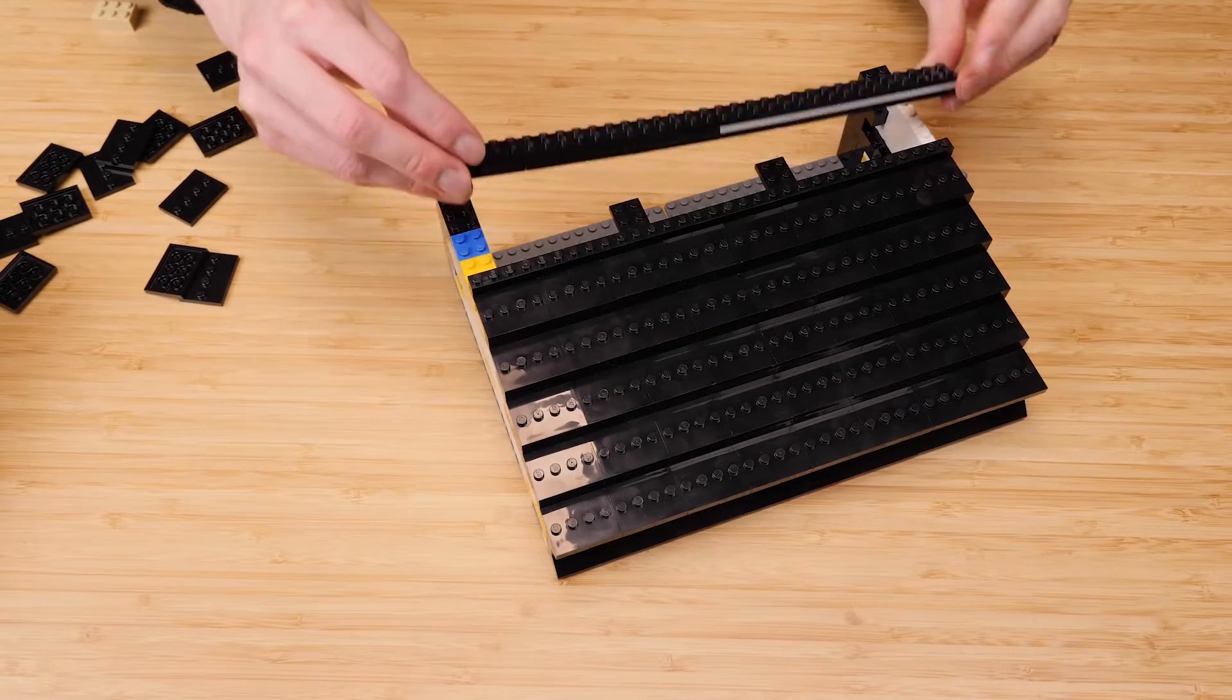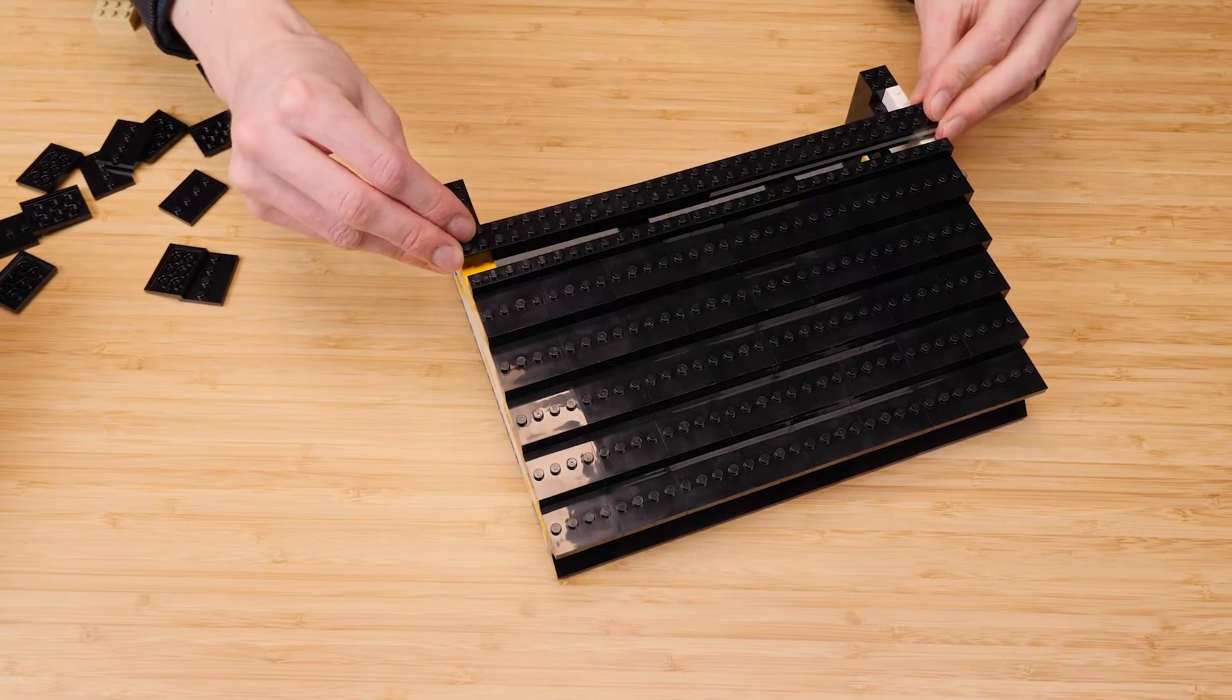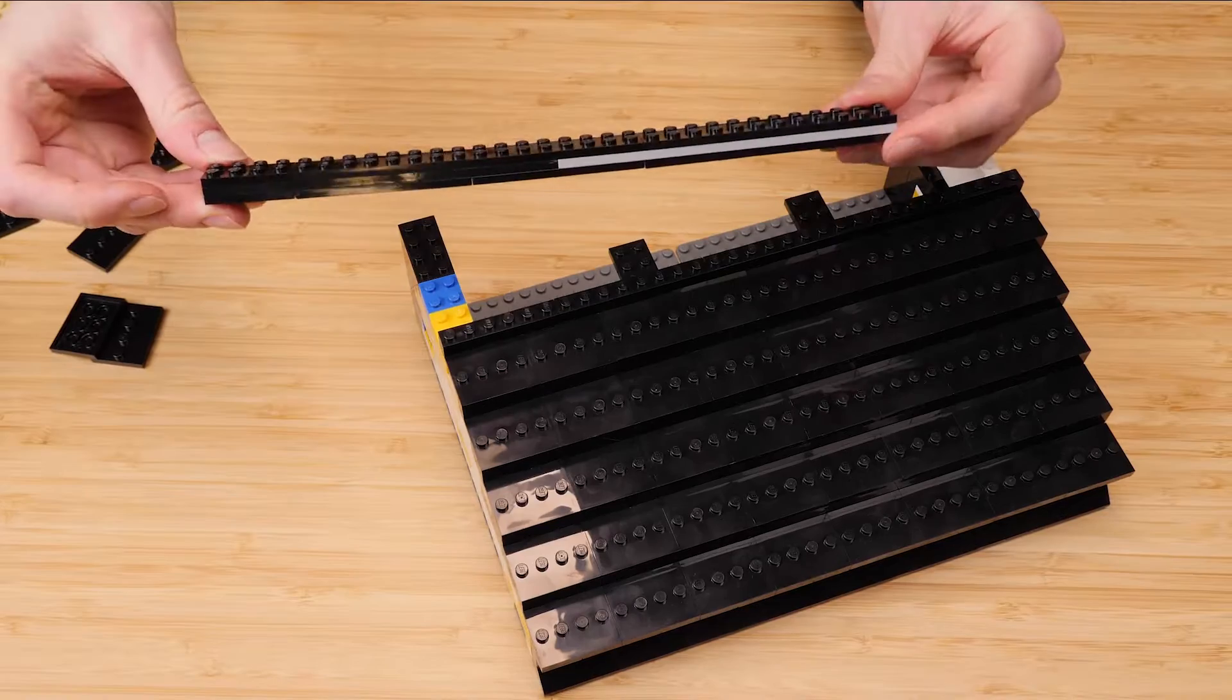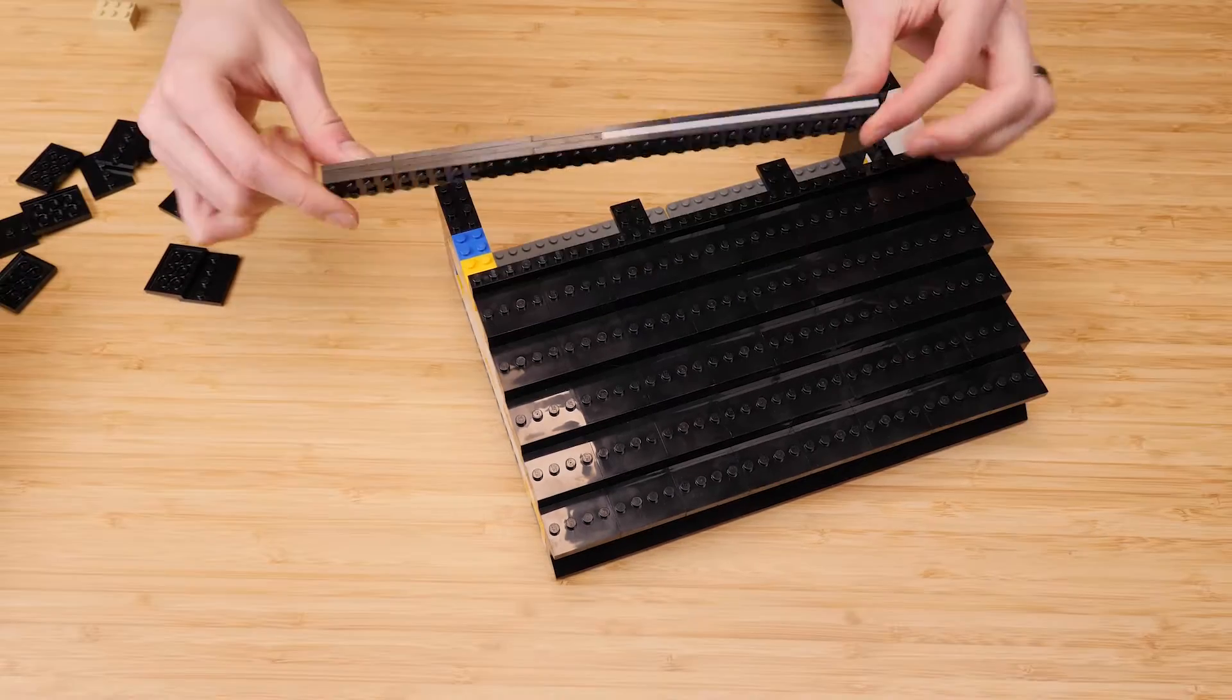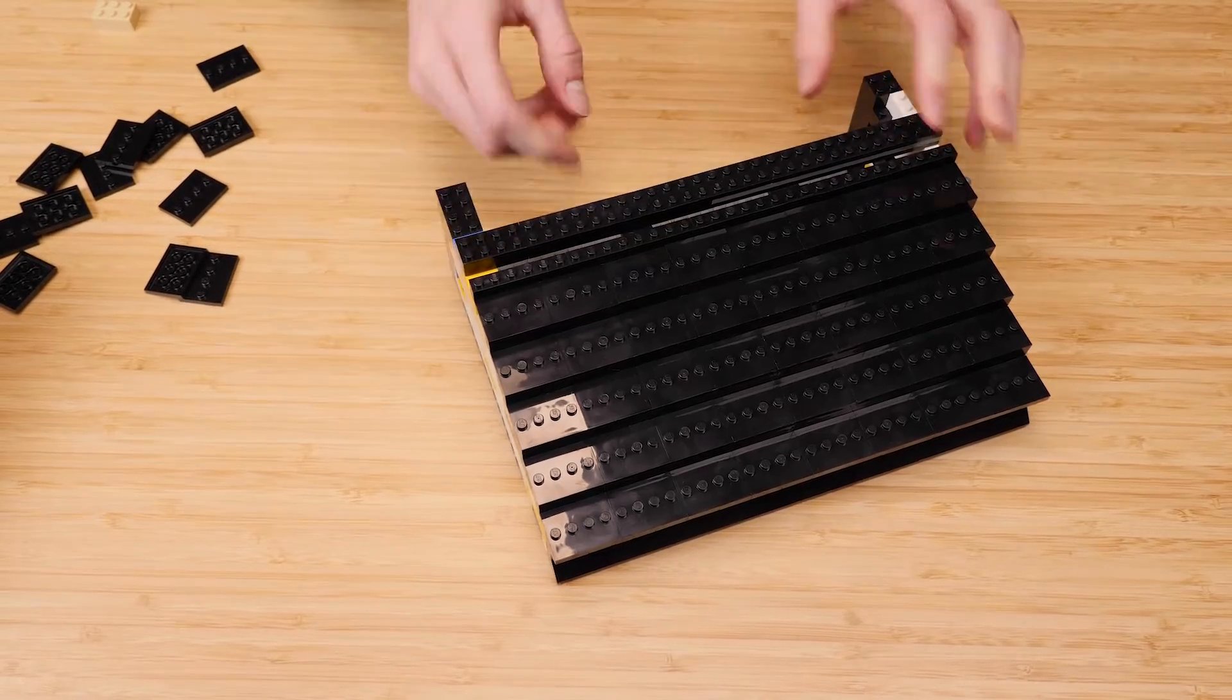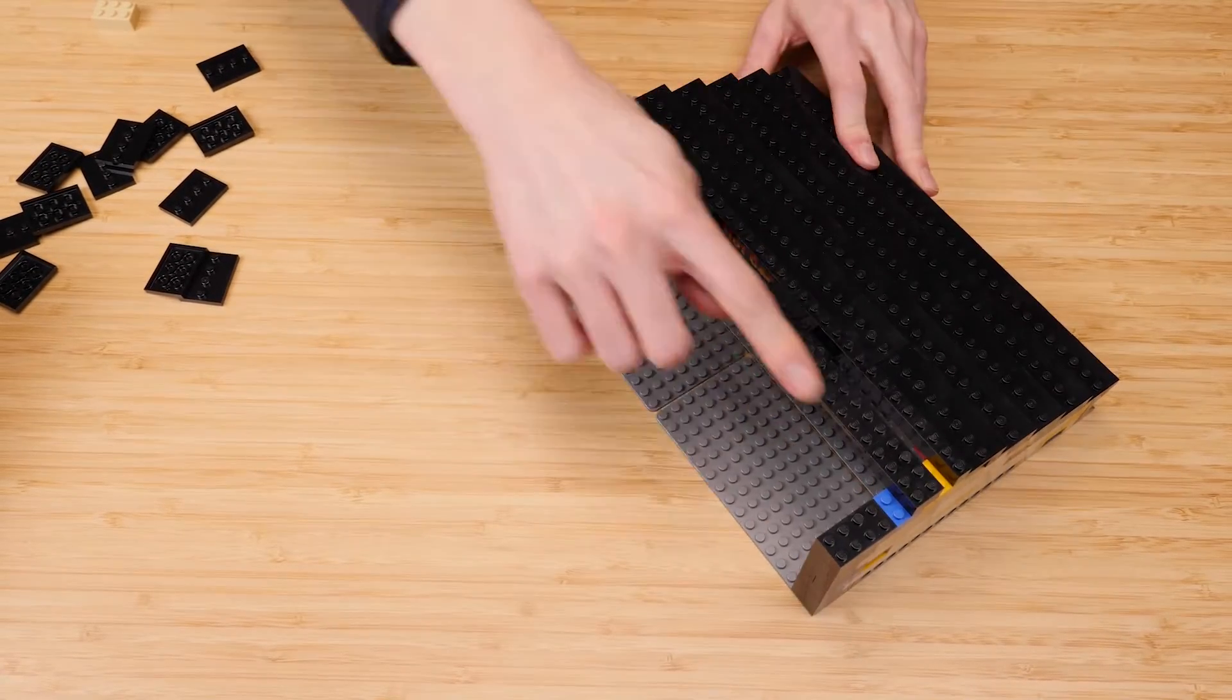For this next part, I've basically made a brick that spans this entire gap out of plates. It's a 2x32 plated-up brick. That gives us all the strength we need. It rests on some of these back parts.